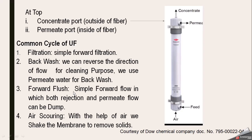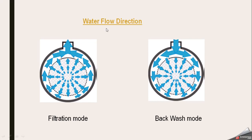Another way of operation is forward flush — simple forward flow in which both reject and permeate flow can be dumped; no resultant water is used. Then there is air scoring: with the help of air pressure entering the membrane, impurities stuck on the membrane surface are shaken loose and drop off, removing them from the surface.